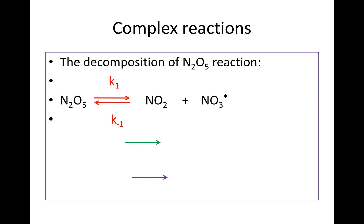Now, NO₃* is a free radical. That free radical then reacts with NO₂ through k₂ as the rate constant to give you NO plus O₂ plus NO₂, the final product.